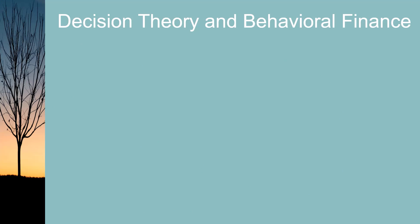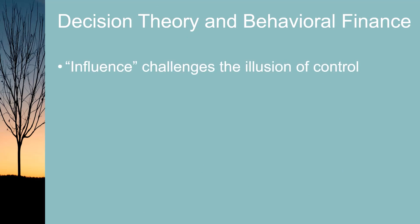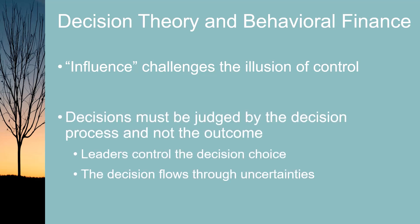The influence diagram helps clarify some key tenets of decision theory and behavioral finance. The very term influence challenges the behavioral bias of an illusion of control. Decision theory says decisions must be judged by the decision process and not the outcome — the only item that company leaders control is the decision choice among alternative strategies. That decision flows through a network of uncertainties, and the outcome node states what we value. The probabilities and value amounts of those outcomes can be mapped with the decision tree, which is what we'll look at next.